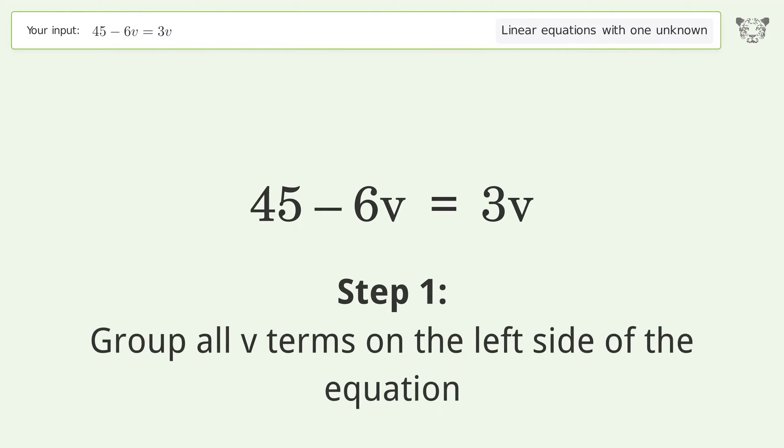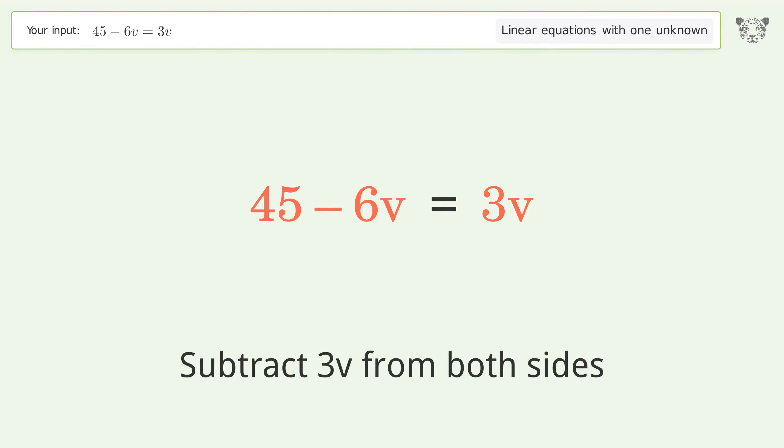Group all V terms on the left side of the equation. Subtract 3V from both sides.